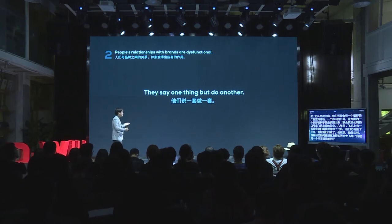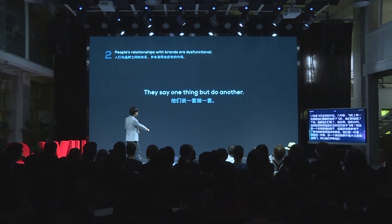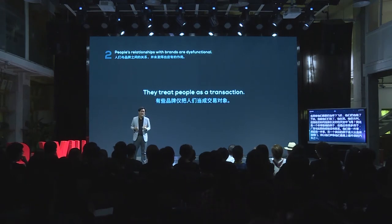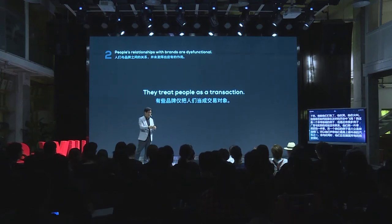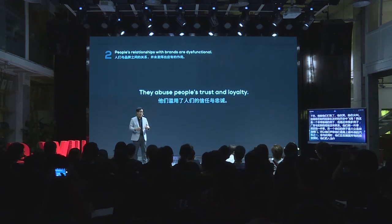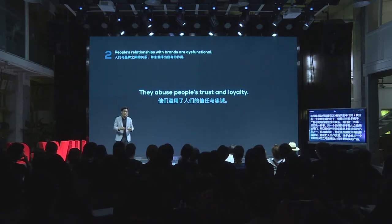Brands say one thing and do another. Another example would be Volkswagen's Diesel Gate — they claimed to be one of the most environmentally friendly cars on the road, but simultaneously they were subverting all the emissions testing. And they treat people like a transaction. A lot of businesses from a KPI standpoint are pushing people primarily to purchase the product. What's actually happening is they're abusing people's trust and loyalty — after people have purchased the product and are loyal to it, they're still not being treated any better.